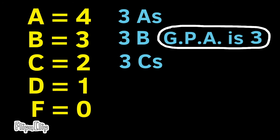And again, if you had 3 B's, 3 A's, and 3 C's, the grade point average would also be 3.0. We can continue doing this with 4 B's, and the grade point average would still be 3.0.